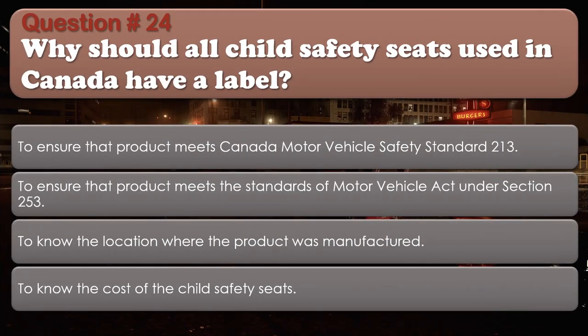Question number 24. Why should all child safety seats used in Canada have a label? To ensure that the product meets Canada Motor Vehicle Safety Standard 213. To ensure that the product meets the standards of the Motor Vehicle Act under Section 253. To know the location where the product was manufactured. To know the cost of the child safety seats. The correct answer is: To ensure that the product meets Canada Motor Vehicle Safety Standard 213.